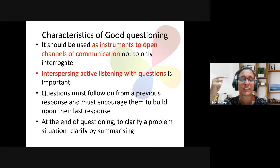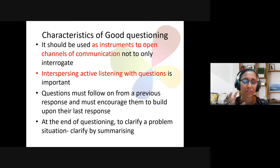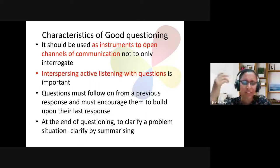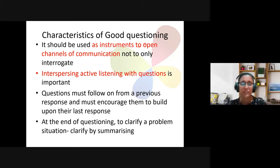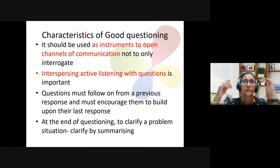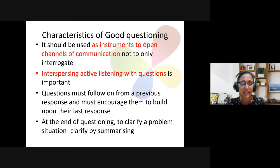In counseling we were given a rule: two to three questions, then comes a response. Two to three questions, then a response — very consciously keeping that in mind. Questions must follow on from a previous response and encourage the counselee to build upon their last response. At the end of questioning to clarify a problem situation, always clarify by summarizing. You may say: 'John, what I heard you say is that you feel terrible going to college, you're concerned you don't seem to have friends there, and that's a huge problem for you — and what I do see is that you would like to figure this out.' So you've clarified the problem by summarizing.